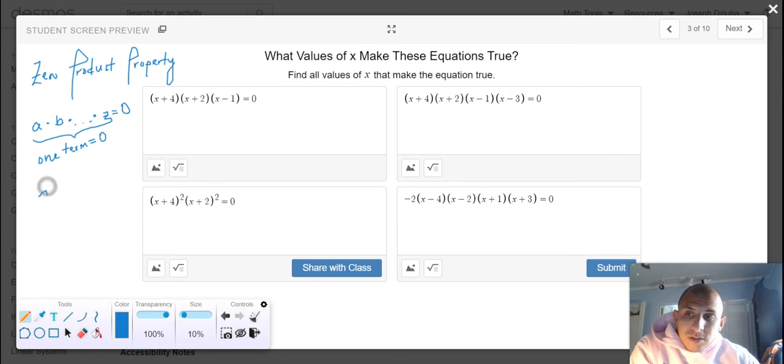Now back then, in algebra one, components were individualized, right? So, it was very intuitive, two times zero is zero, so therefore x was zero.